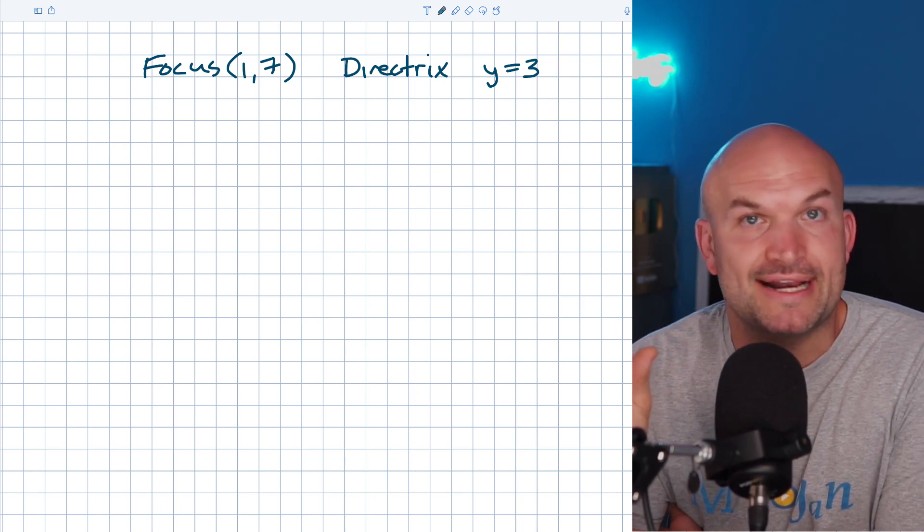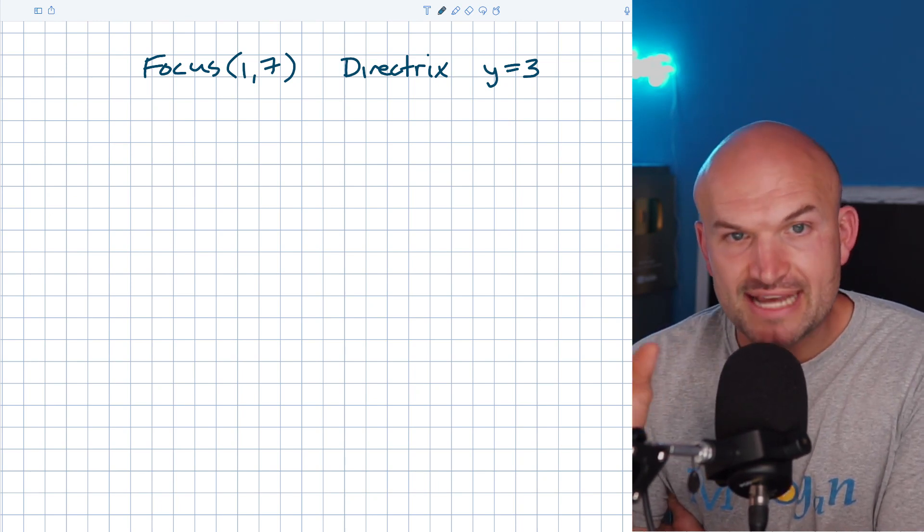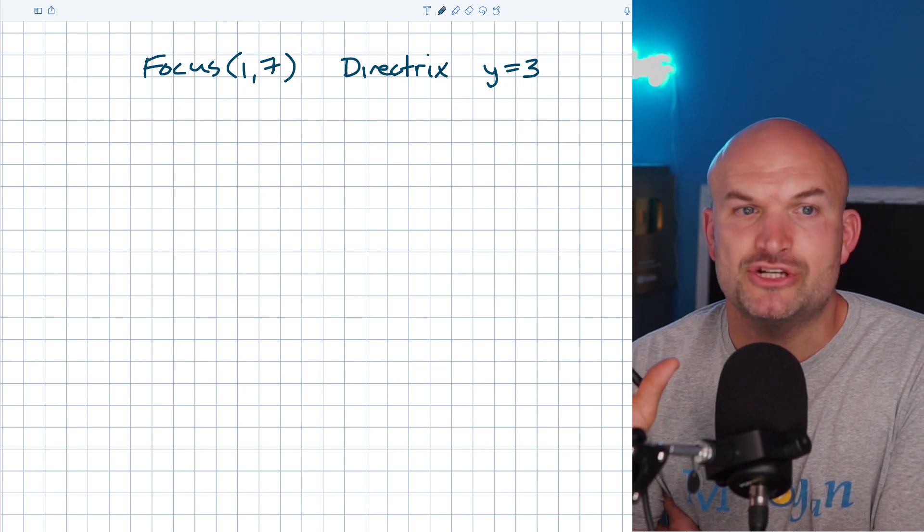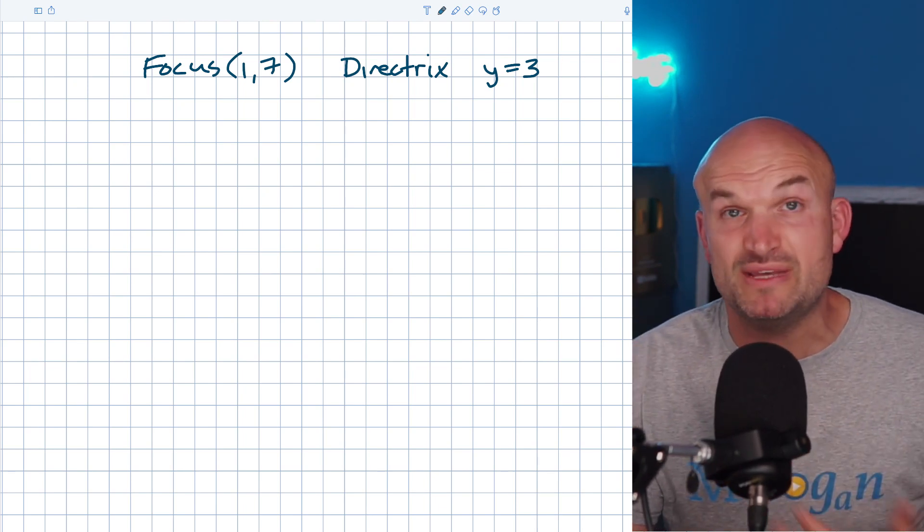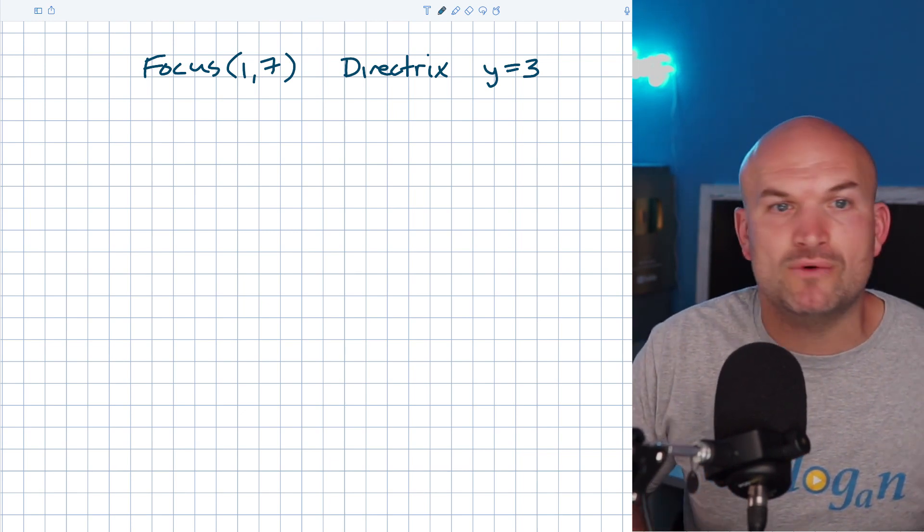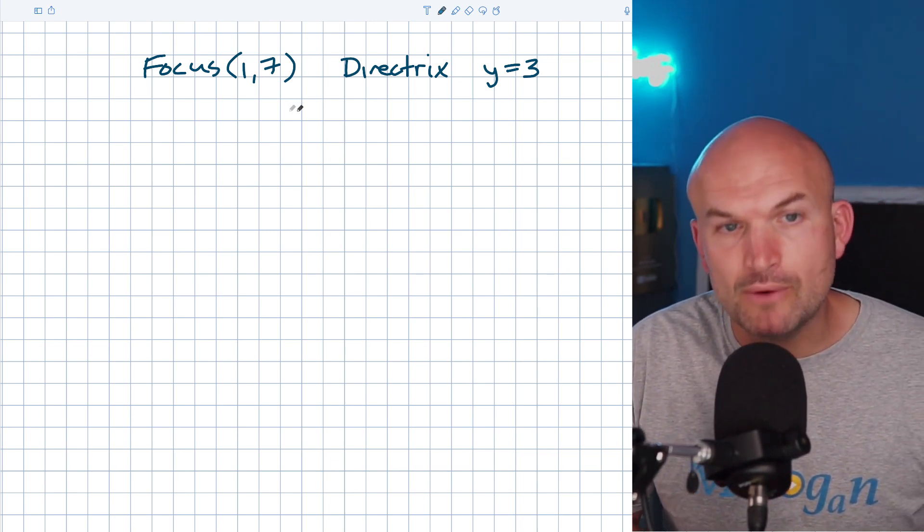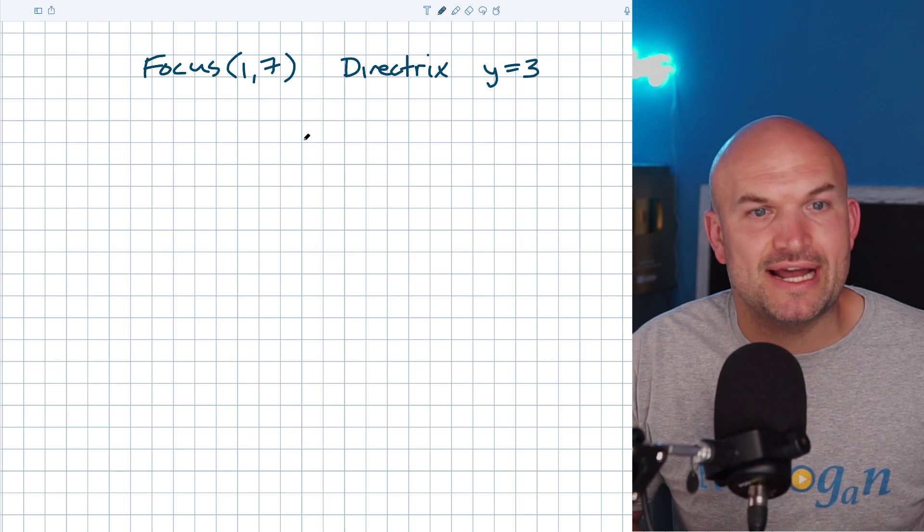We're understanding our value of p, but we switch up those relationships. Now we only have the focus and the directrix - what's the relationship between them and how does the vertex fall within that relationship? When we're trying to write the equation of our parabola, I want you to plot the information.